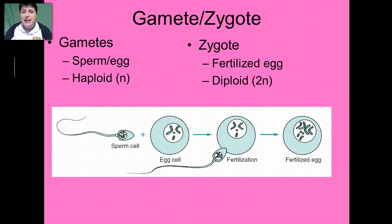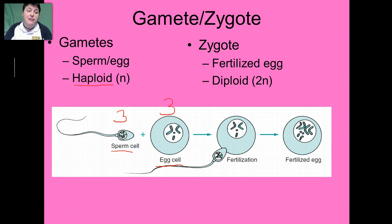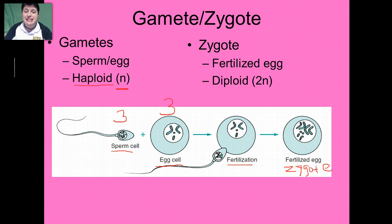Let's compare gametes and zygotes. Our gametes — sperm and egg — are haploid. In this sperm cell we have three chromosomes, and in this egg cell we have three chromosomes. Haploid is represented as the letter N. The zygote is our fertilized egg arising after fertilization. Counting up our chromosomes in the zygote, we get six — we've returned to our diploid state. The diploid is referred to as the 2N number; two times three equals six, back to diploid.